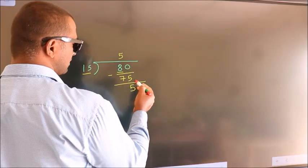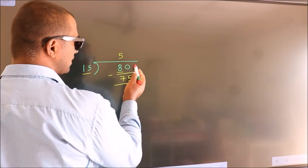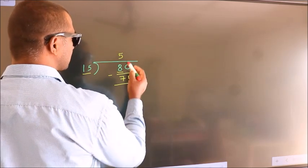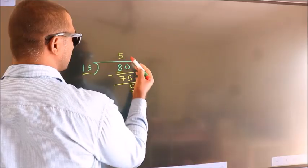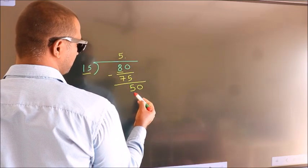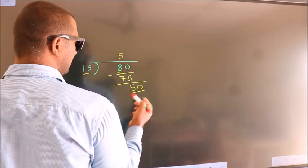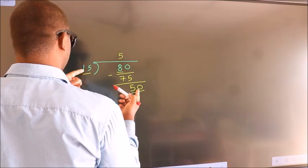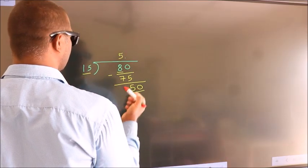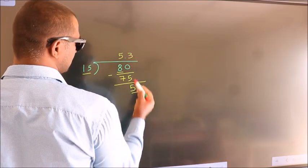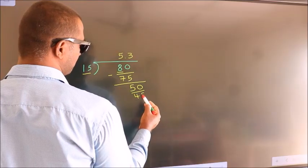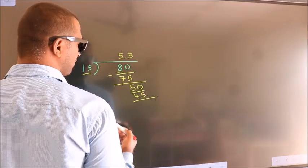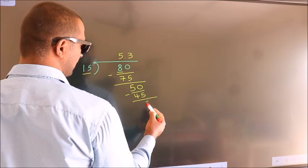After this, there are no more numbers to bring down. So what we do is, we put a dot and take 0. So 50 — a number close to 50. In the 15 times table, 15 threes are 45. Now we subtract. We get 5.